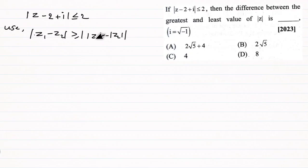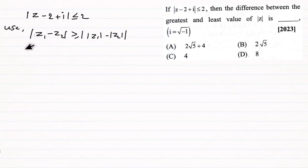We apply this property to z minus (2 plus i). So modulus of z minus (2 minus i) is greater than or equal to modulus of z minus modulus of (2 minus i), which is less than or equal to 2 as given.